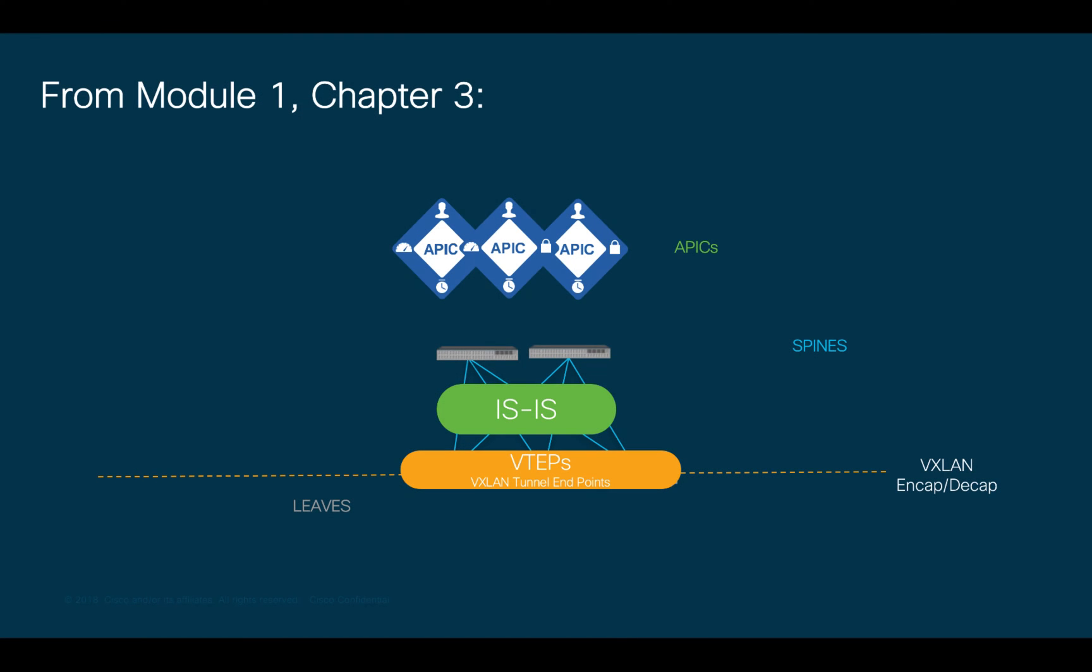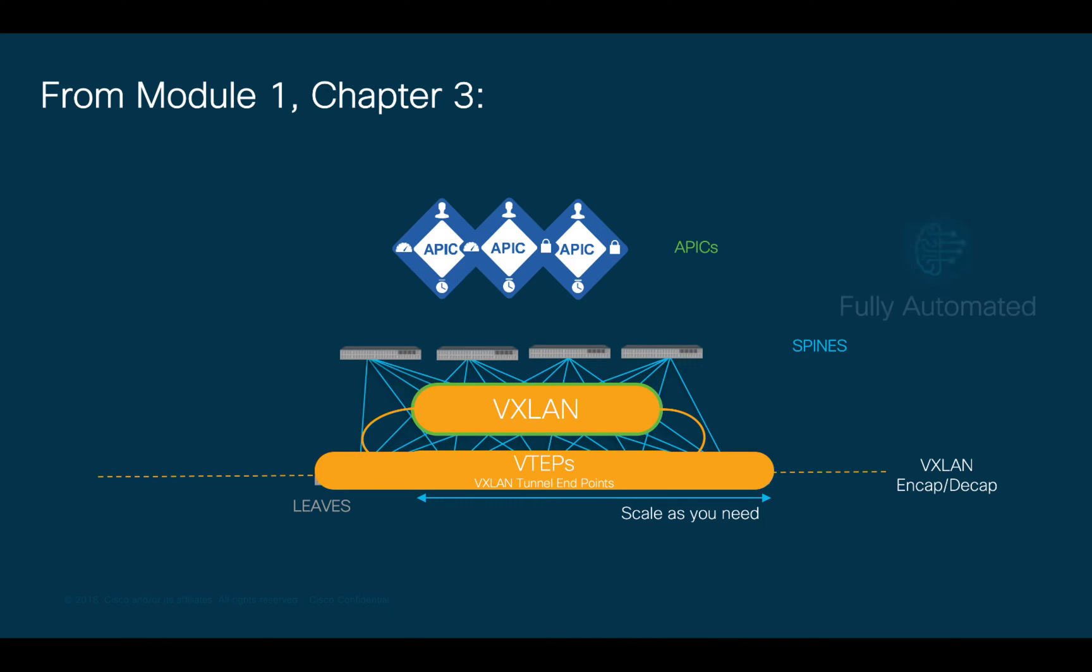In previous videos, we covered how ACI works behind the scenes and said that as part of the initial installation, it provides us with a fully automated ISIS underlay and a VXLAN overlay network between the spine and leaf layers. We also said that leaves perform as VXLAN tunnel endpoints where we encap and de-cap all traffic entering and leaving the fabric respectively, and that you may grow any layer over time automatically.